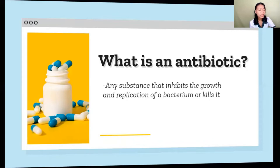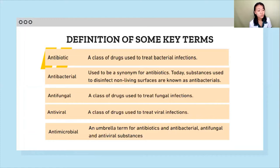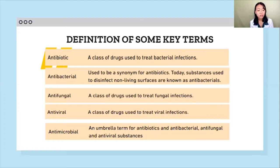Let's define some key terms. Antibiotic is a class of drugs used to treat bacterial infections. Antibacterial was once a synonym for antibiotics, but today these substances are used to disinfect non-living surfaces. Antifungals are drugs used to treat fungal infections. Antivirals are drugs used to treat viral infections. Antimicrobial is the general umbrella term for antibiotics, antibacterials, antifungals, and antiviral substances.